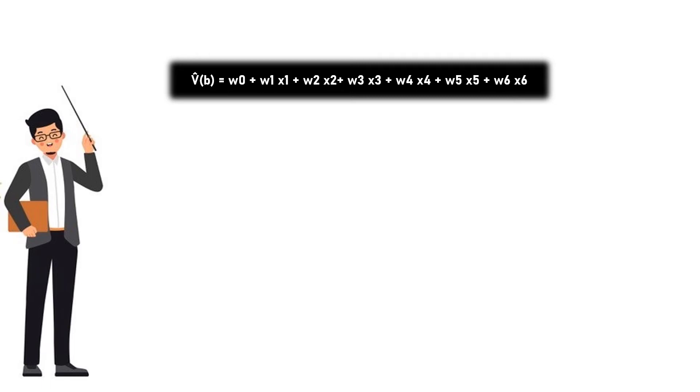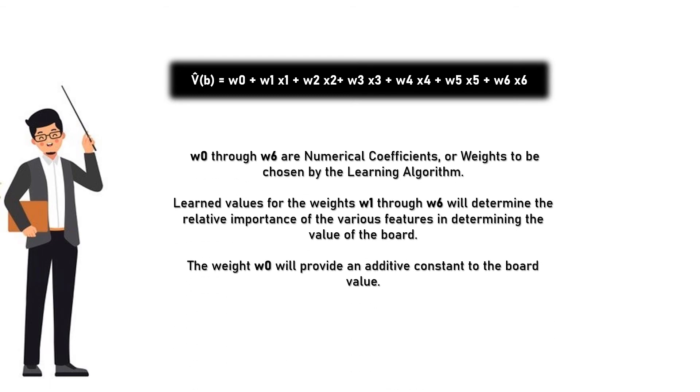This learning program will represent as a linear function of the form: V̂(b) = w0 + w1·x1 + w2·x2 + w3·x3 + w4·x4 + w5·x5 + w6·x6, where w0 through w6 are numerical coefficients or weights to be chosen by the learning algorithm. Learned values for the weights w1 through w6 will determine the relative importance of the various features in determining the value of the board. The weight w0 will provide an additive constant to the board value.